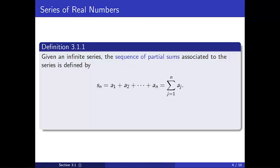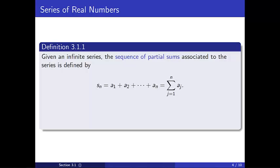Given an infinite series, the sequence of partial sums associated to the series is defined by S_n, which is the sum up to the n-th term. If the limit of the partial sums exists and converges to a value we'll call S,